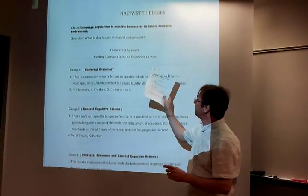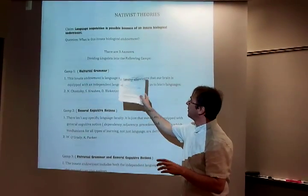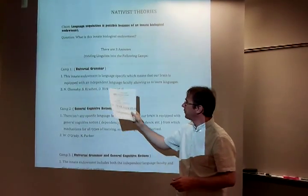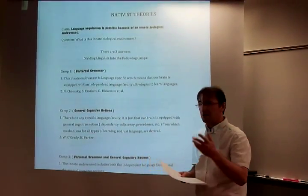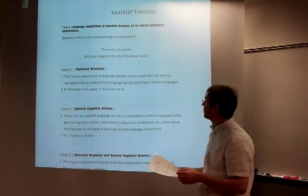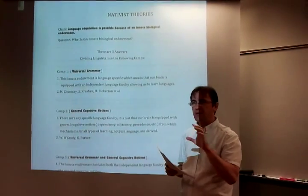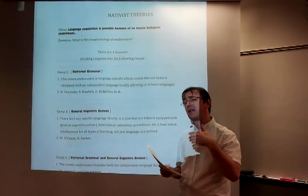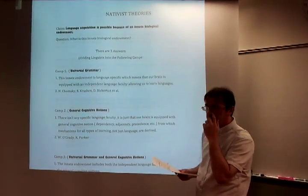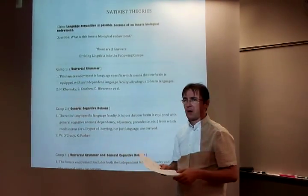There are three answers to this question that divide linguists into the following camps. The first camp, called Universal Grammar, says that this innate endowment is language specific — our brain is equipped with some sort of language-specific device that enables us to learn languages. The prominent names in this camp are Noam Chomsky and Steven Krashen.